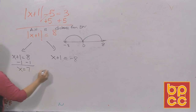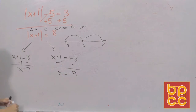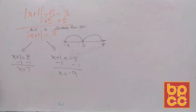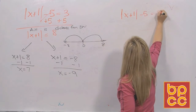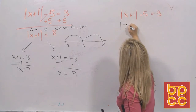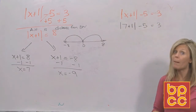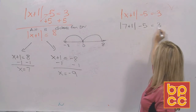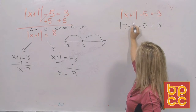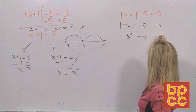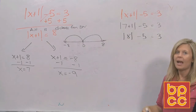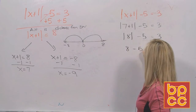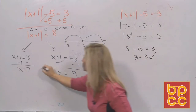Because we saw earlier there's no guarantee absolute value answers will work, we have to do a check. Go back to the original and substitute. Let's use 7: absolute value of 7 plus 1, minus 5, equals 3. In the symbol you can't have two numbers, so combine first. Absolute value of 8 — how far am I from zero? I am 8 from zero. Is 8 minus 5 equal to 3? Sure it is. That checks.